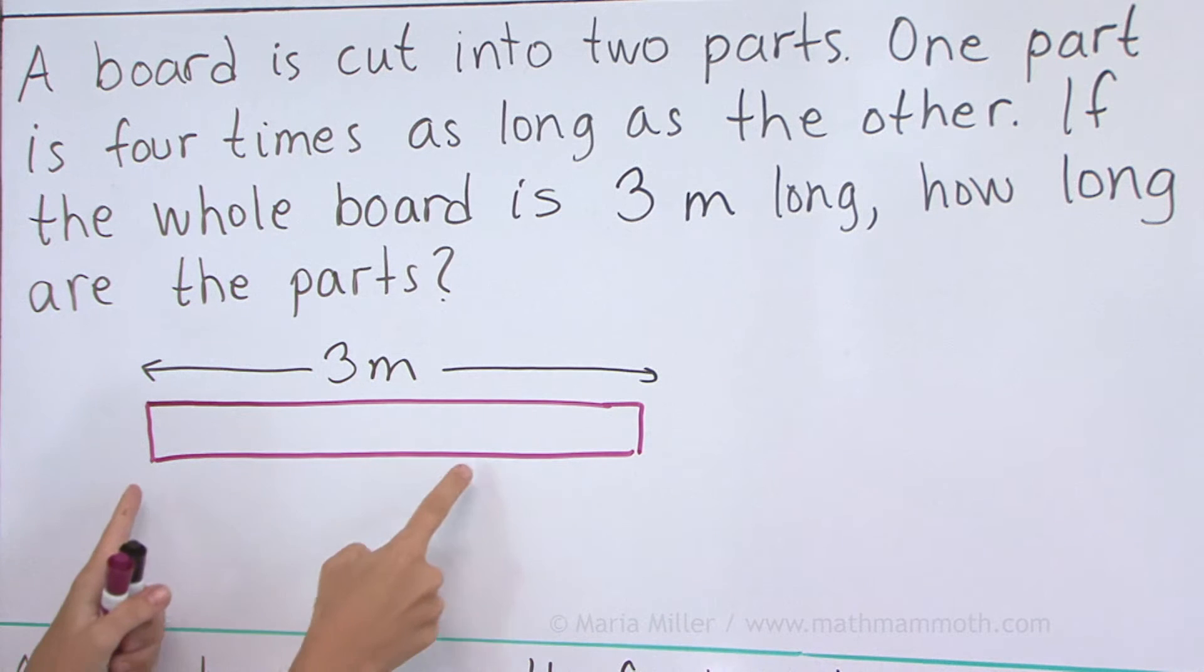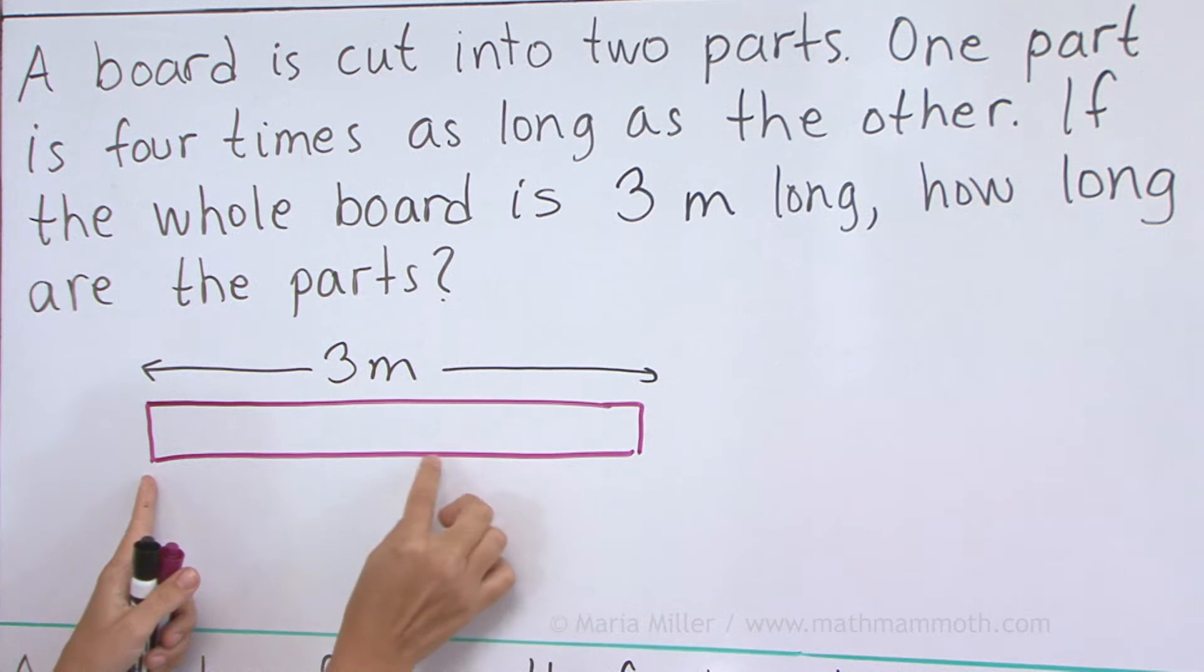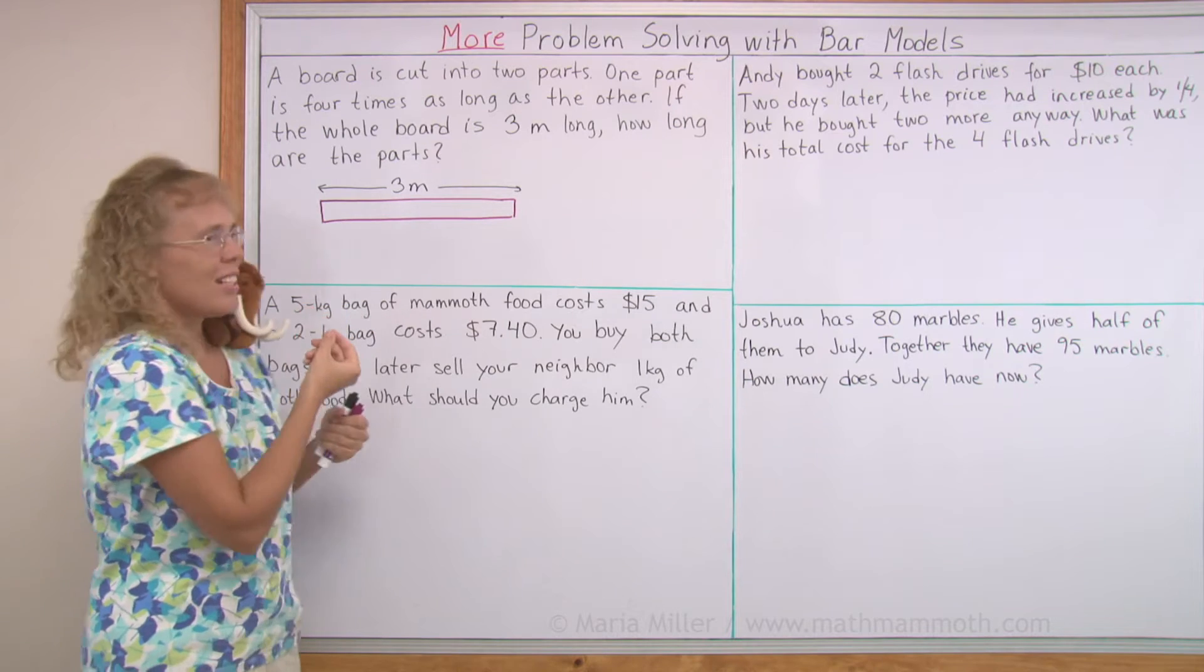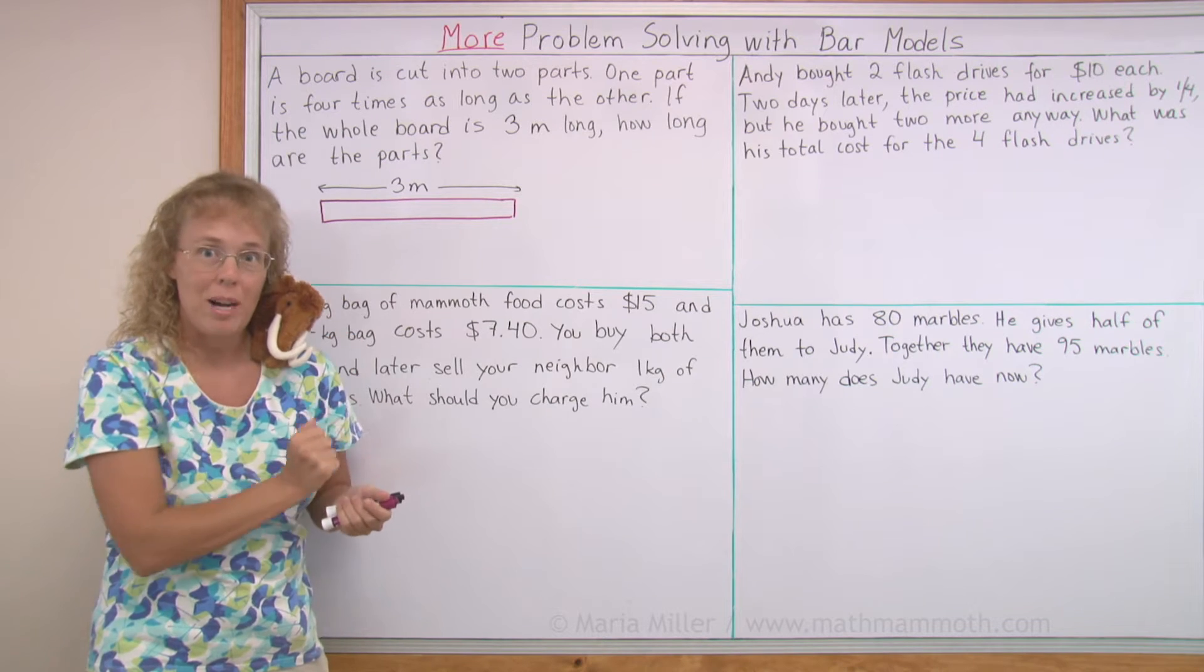Now, if this longer part is going to be four times the smaller part, then how many parts in total can we think of there being? This would be one part, and then the longer part is actually four parts, so to speak. So that means that I will think of the board as being in five equal parts.